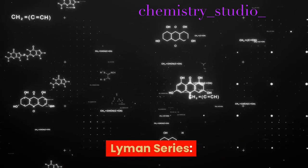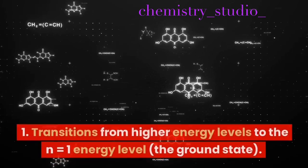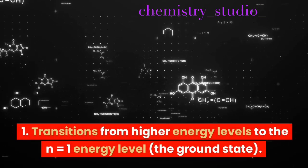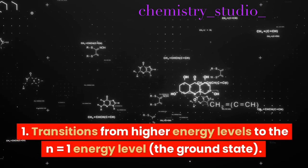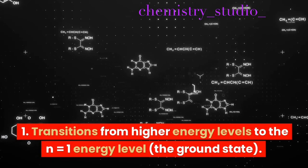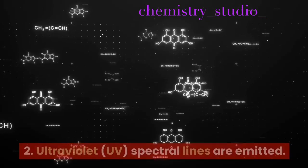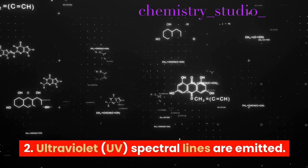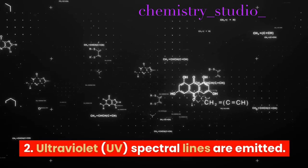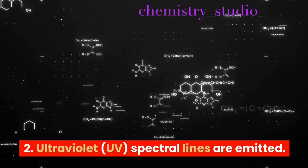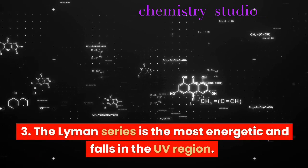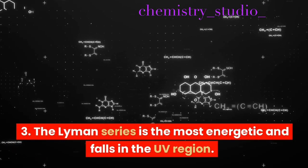Lyman series: transitions from higher energy levels to the N=1 energy level, the ground state. Ultraviolet (UV) spectral lines are emitted. The Lyman series is the most energetic and falls in the UV region.